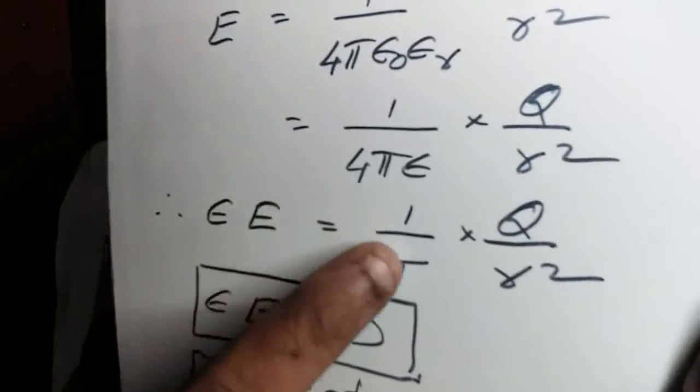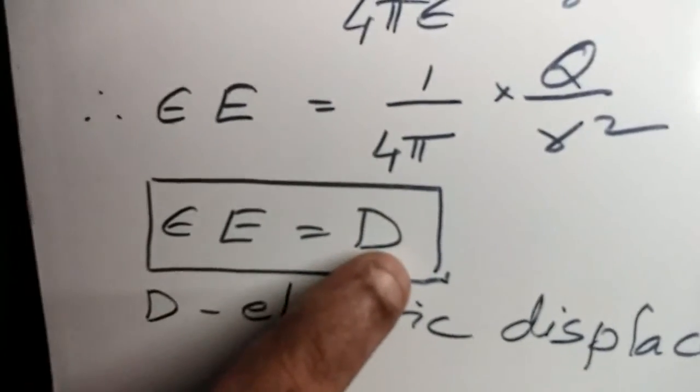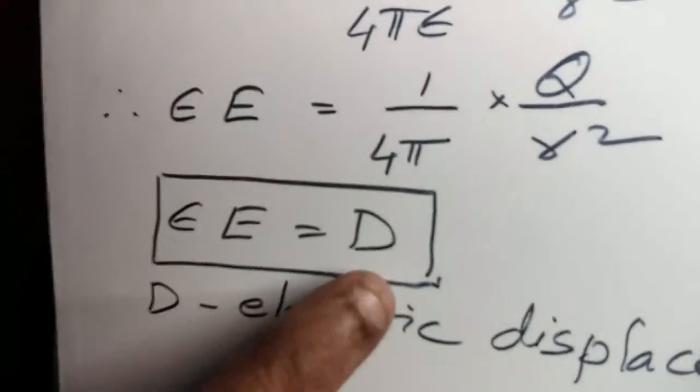This quantity, epsilon into E, is denoted by the symbol capital D. Capital D is called electric displacement. So electric displacement D equals absolute permittivity into electric intensity. We will see the significance of displacement later. For the time being, we will stop here. Thank you.